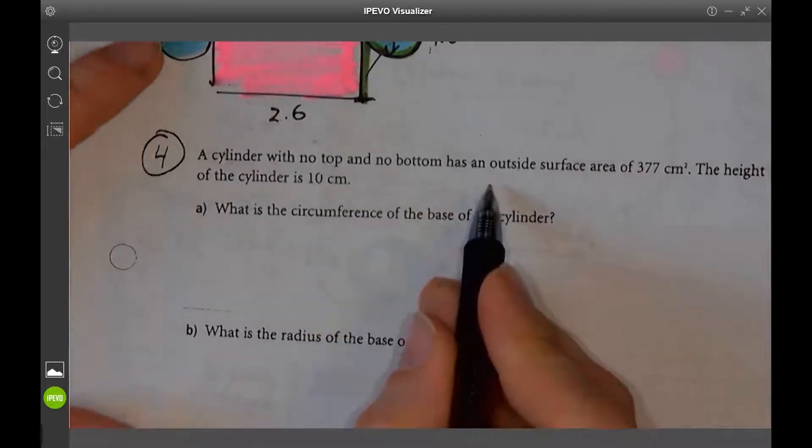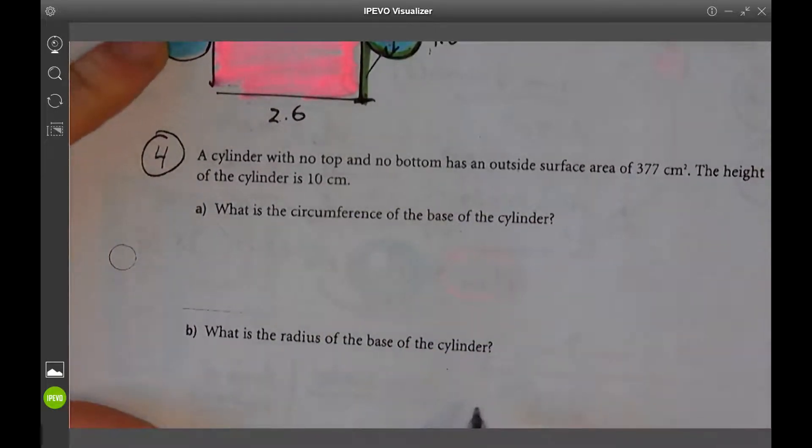a cylinder with no top and bottom has an outside surface area of 377. The height of the cylinder is 10 centimeters. What is the circumference of the base of the cylinder?